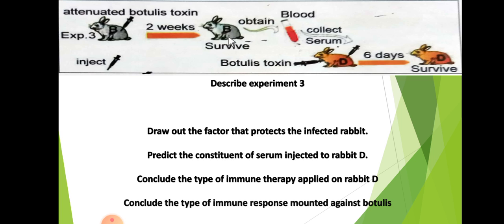After that, we took blood from Rabbit B. Blood consists of red blood cells, white blood cells, and plasma. We took all the blood and processed it by centrifugation, which separates it into three layers: red blood cells, white blood cells, and plasma. We collected the serum — the serum is the plasma.